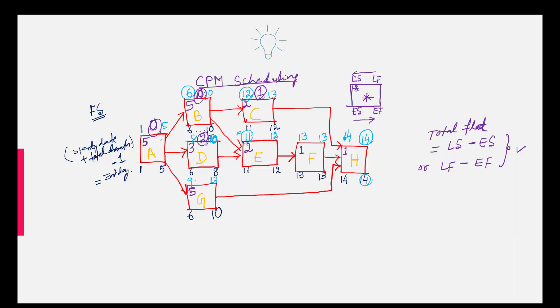And what about this? 9 minus 6 or 13 minus 10 all are resulting 3. This is the total float. Here 11 minus 11 or 12 minus 12 is 0. This is the total float. 13 minus 13 is giving zero float. And here also 14 minus 14 is giving zero float.